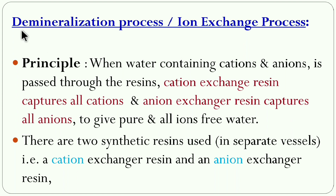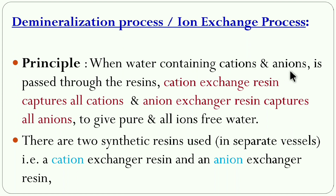The name itself — demineralization — 'de' means loss and 'mineral' refers to ions, so there is a loss of all ions present in the water. In ion exchange, only H⁺ and OH⁻ ions are exchanged. The principle is: when water containing cations, anions, or ionic impurities is passed through resins — a cation exchanger resin and an anion exchanger resin — the cation exchanger captures all cations and the anion exchanger captures all anions, making the water free from all ionic impurities. Two types of resins are used in separate vessels.